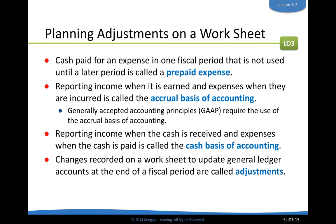When talking about adjustments, we're using the accrual basis of accounting. This follows GAAP principles and means we report income when it is earned, not necessarily when we receive the cash for it. For example, when Delgado Web Services makes a sale on account, they count it as a sale even though they didn't receive cash for it yet — whoever they sold to owes them money. That's accrual basis of accounting.